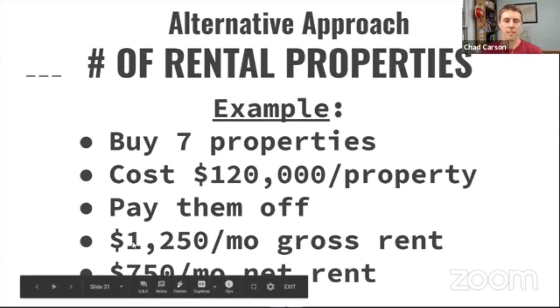When it's all said and done, your seven properties each rent for $1,250 per month. After paying all expenses — taxes, insurance, maintenance, capital expenses, and things like that — you have about $750 per month left over on each property.